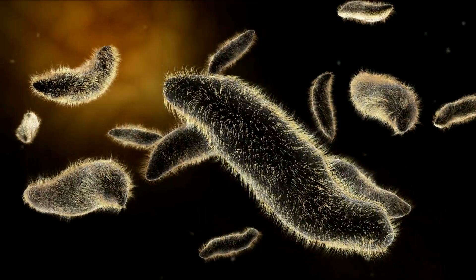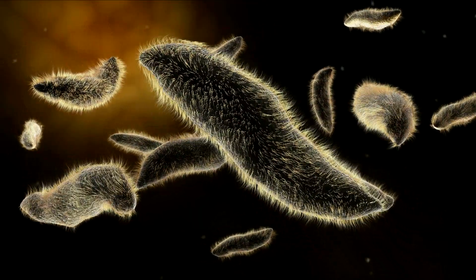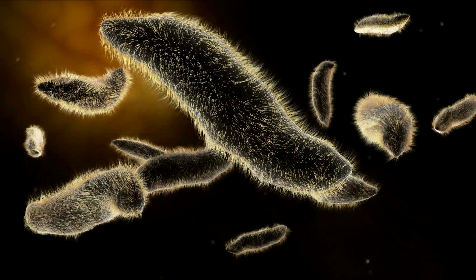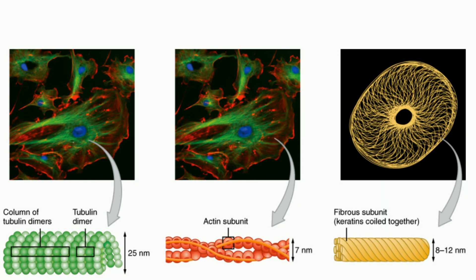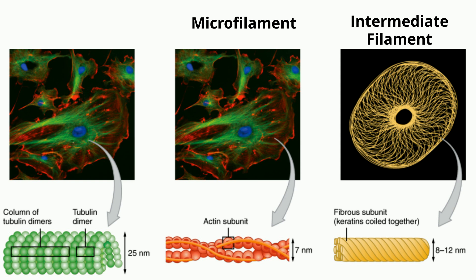The cytoskeleton consists of three types of fibers: microfilaments, intermediate filaments, and microtubules.